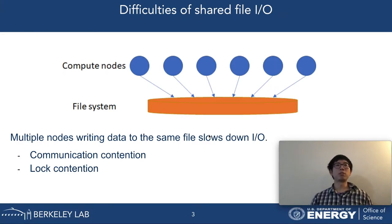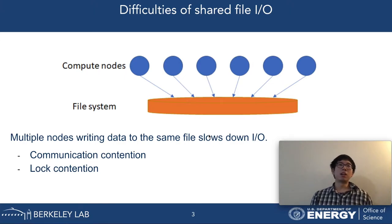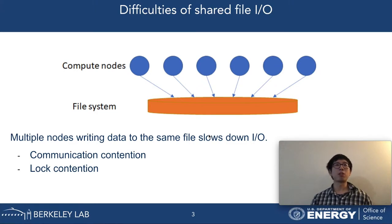When multiple compute nodes are storing data into the same file in a file system, there are a few challenges. A file system is for general-purpose storage. To avoid errors, it usually has its own rules to handle I/O requests from different compute nodes concurrently. A method is to use a lock or token to avoid multiple compute nodes from accessing the same file region. As the number of compute nodes scales, many compute nodes could be competing for the same lock repeatedly. This scenario is called lock contention.